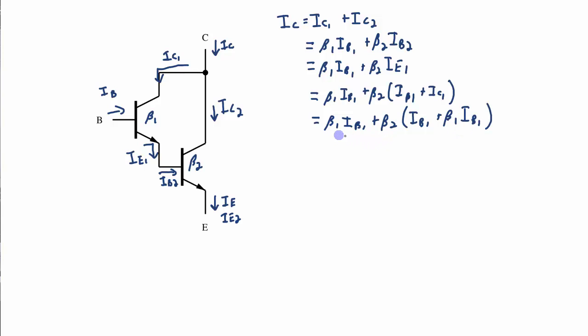And I have an IB1 term in all of the terms in this expression. So I can factor that out. And I get IB1 times beta 1 plus beta 2 plus beta 1 beta 2.